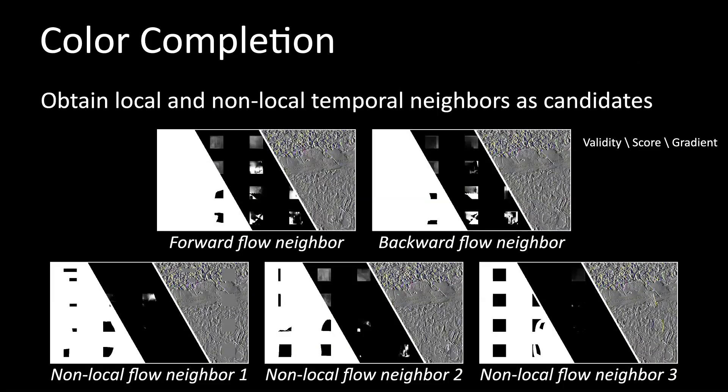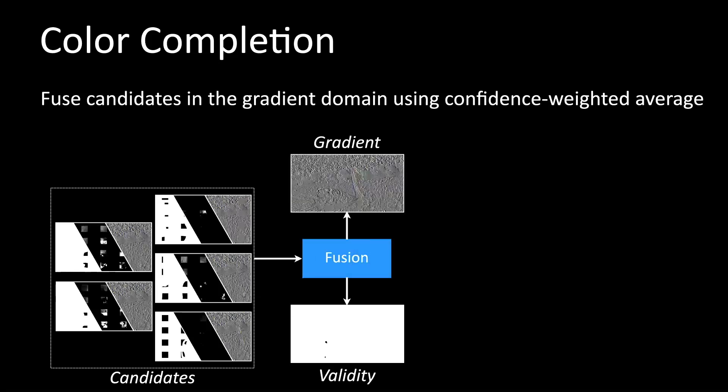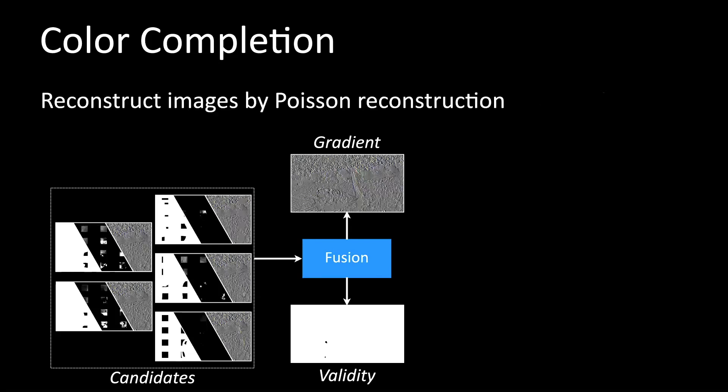For each missing pixel, we will have up to five candidates: the forward flow neighbor, the backward flow neighbor, and three non-local flow neighbors. For each candidate, we estimate a binary validity indicator and a confidence score. The validity indicator tells if a pixel has this kind of candidate. The confidence score tells how much we can trust this candidate. We fuse candidates in the gradient domain. The confidence scores sum to 1 so that we can use them to weight and sum all candidates.